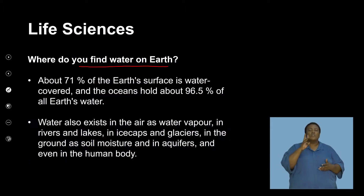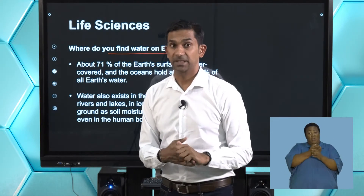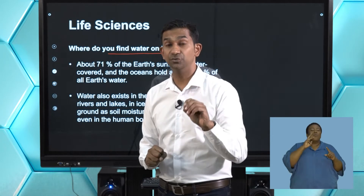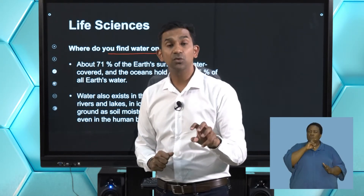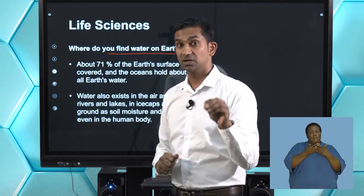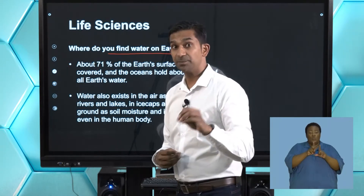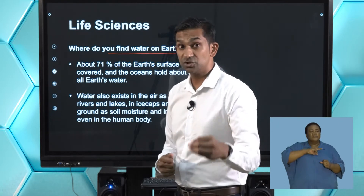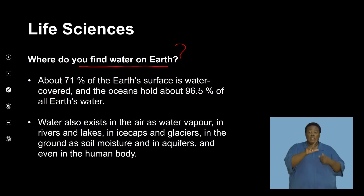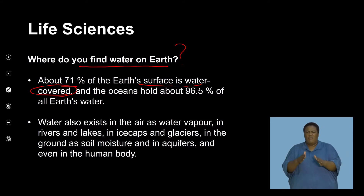Where do you find water on Earth? If you were to look at the globe, you would see that most of the Earth is covered by water. The question is, how much of that water is available for humans to consume? Not all of that water is consumable. About 71% of the Earth's surface is covered by water, including our oceans, seas, rivers, streams, lakes, and dams.